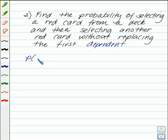So, the second event is dependent on the first event. So, let's find the probability of selecting a red card from a deck. There are 52 cards in a deck and half of them are red. So, that means there's 26 red cards out of 52 in the deck. So, the probability of choosing a red is 26 out of 52.